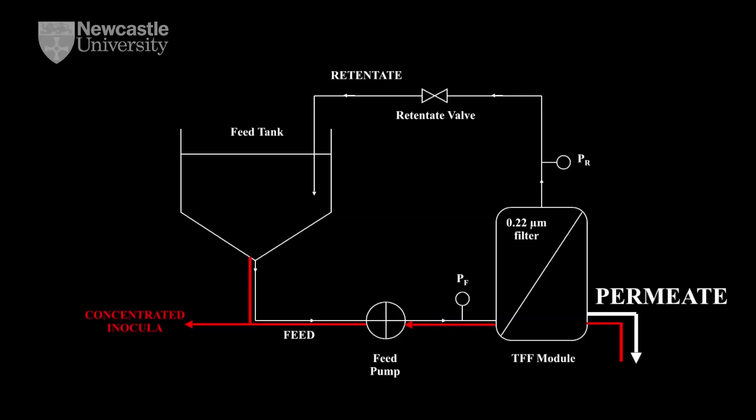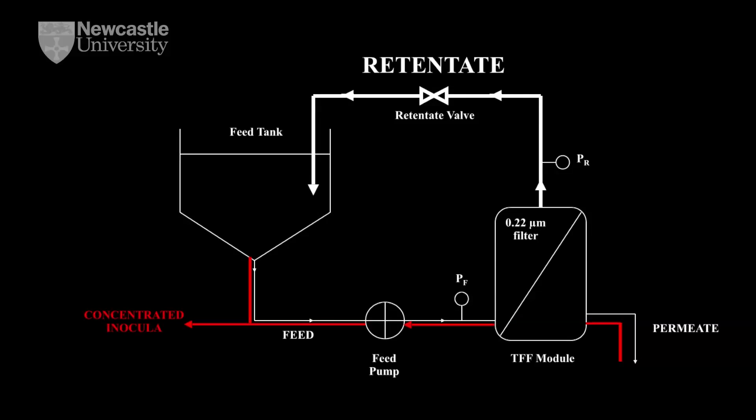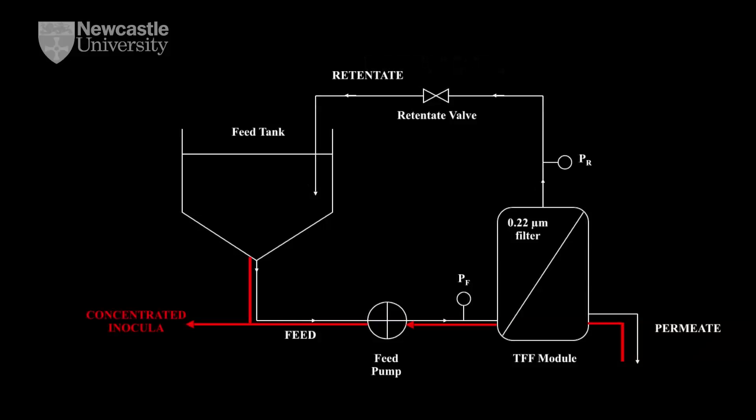When using the TFF to concentrate samples, the retentate is returned to the feed tank. The constant washing of the filter surface with the recirculating feed prevents filter fouling which might be experienced with dead end filtration techniques.